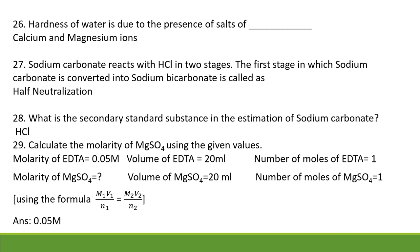Calculate the molarity of MgSO4 using the given data. You are given molarity of EDTA (M1), volume of EDTA (V1), number of moles of EDTA (N1), volume of MgSO4 (V2), and number of moles of MgSO4 (N2). Using the formula M1·V1/N1 = M2·V2/N2, molarity of MgSO4 (M2) = M1·V1·N2 / (N1·V2). Substituting all values, the answer is 0.05 M.